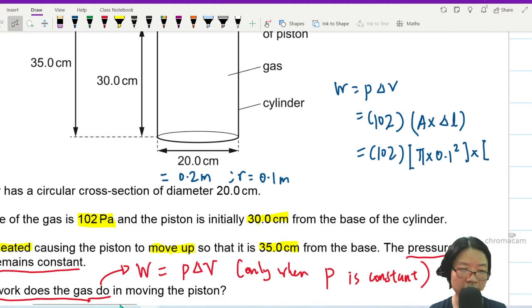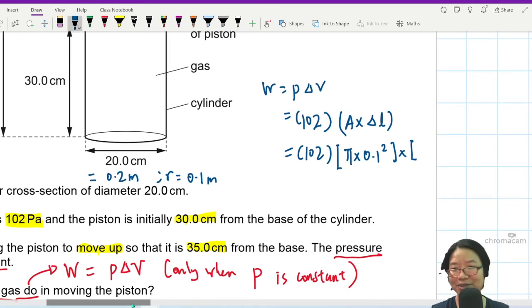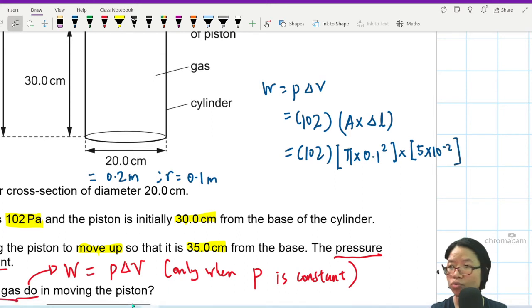Why have to change to meter? So that your final answer can write Joule. All right. So here will be times 5 cm change to meter, negative 2. Then you can press your calculator. This is my delta L in meter, and my area is in meter squared.